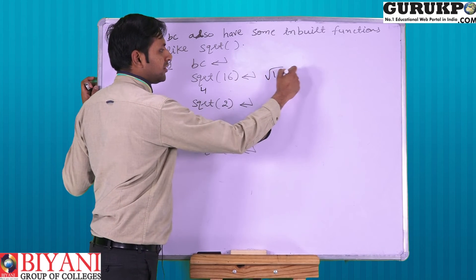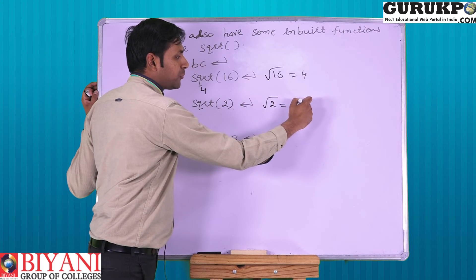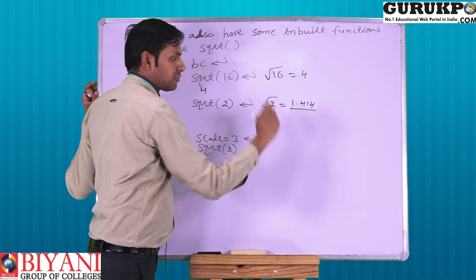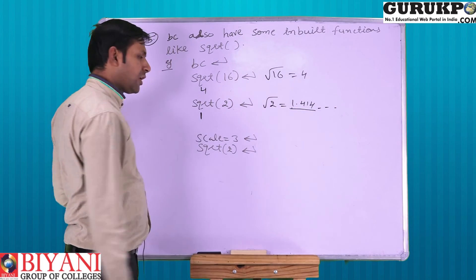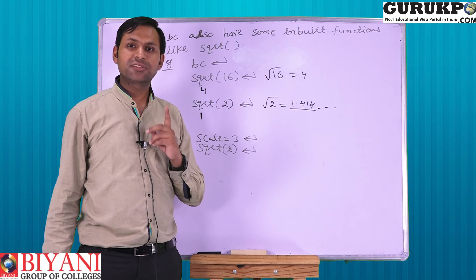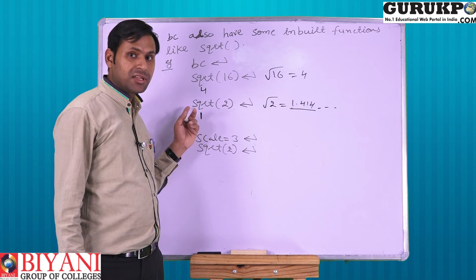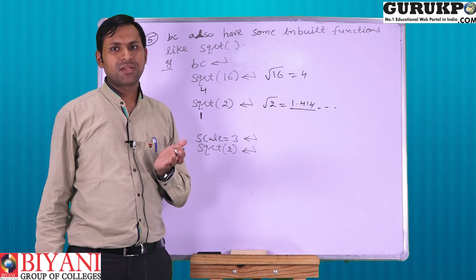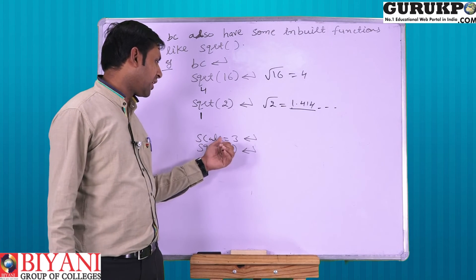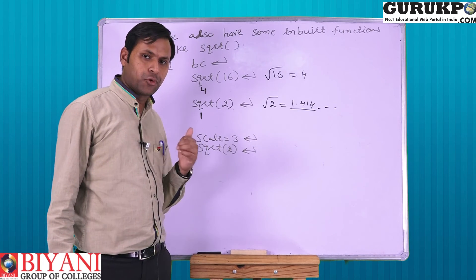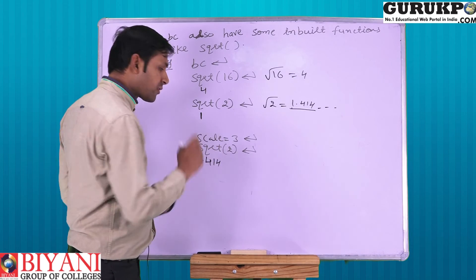SQRT of 16 is equal to 4. Next is SQRT of 2, it is 1.414. But here we get only 1. Here we get 1 since the scale is 0, which we have discussed earlier. If you want value in decimal point, then we have to change scale. So I have set scale up to 3 decimal points. Then the result is 1.414.